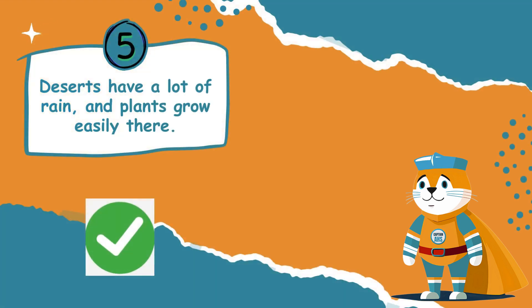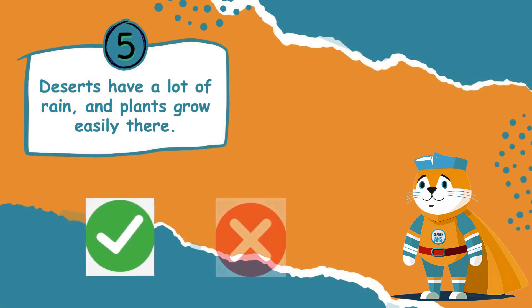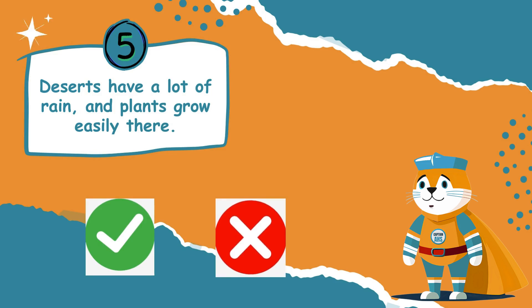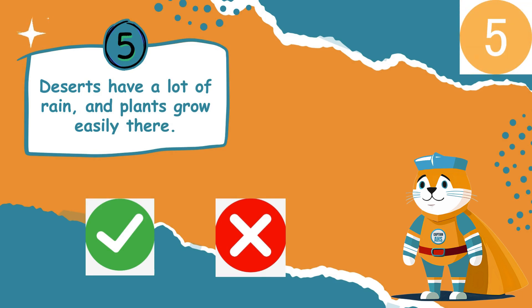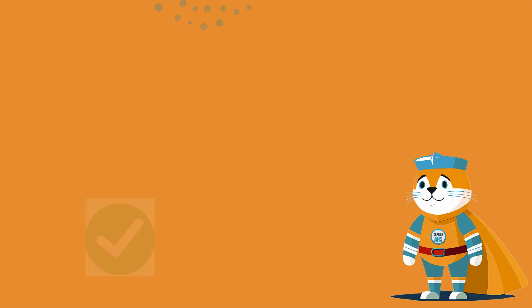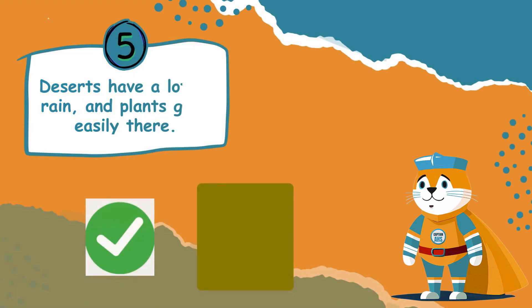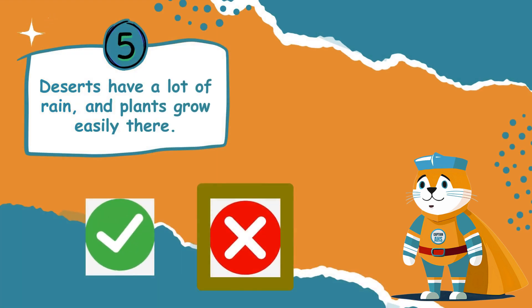Deserts have a lot of rain and plants grow easily there. Is this statement true or false? This statement is false. Deserts are dry and get very little rain, which makes it hard for plants to grow.